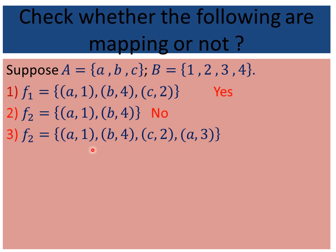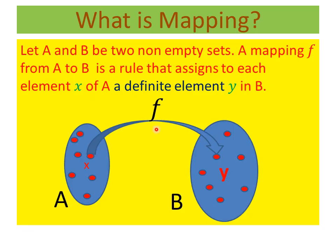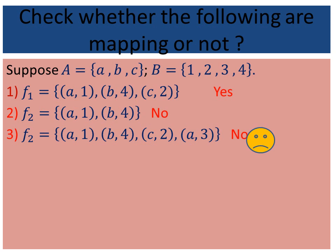Now for another example F3: is F3 a mapping? The answer is no. Looking at the definition, we highlight the term 'a definite element Y in B' — every element of A must have only one image. But here a has two images: 1 and 3. Therefore this is not a mapping.